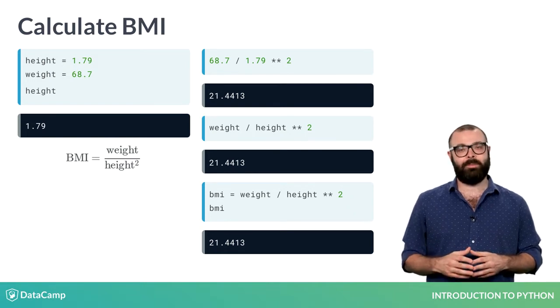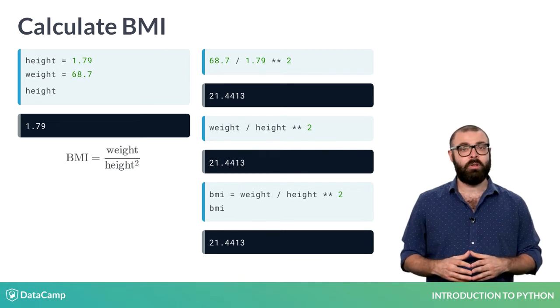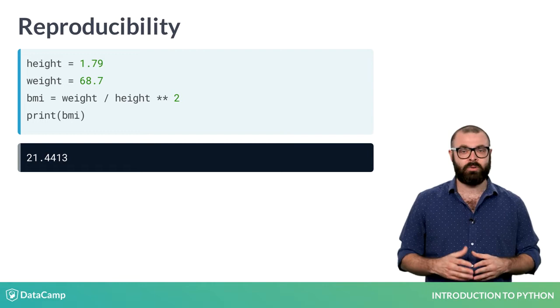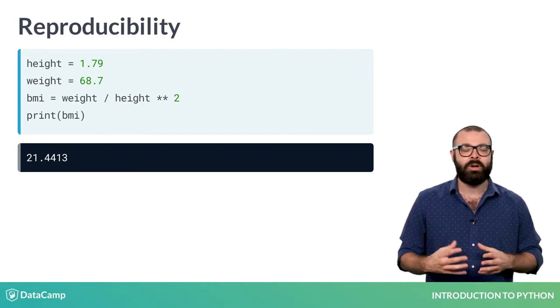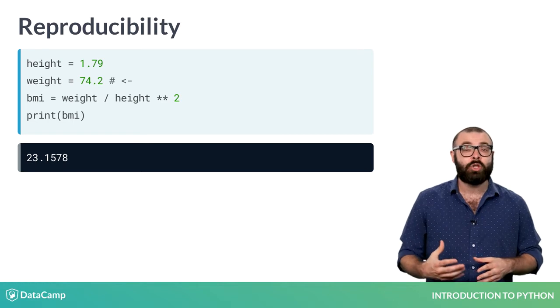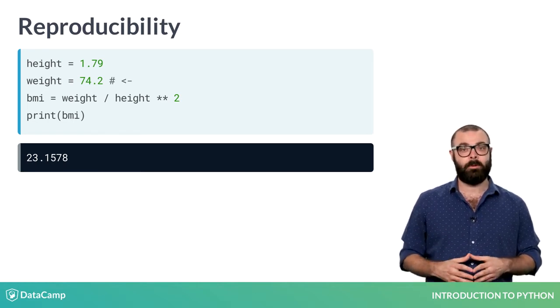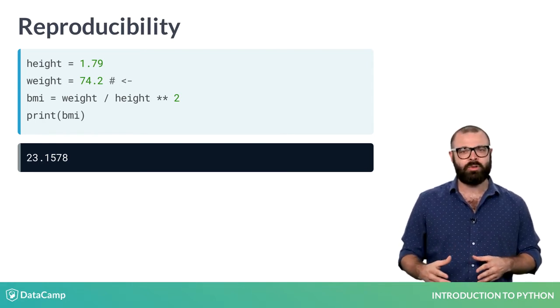In Python, variables are used all the time. They help to make your code reproducible. Suppose the code to create the height, weight and BMI variables are in a script like this. If you now want to recalculate the BMI for another weight, you can simply change the declaration of the weight variable and rerun the script. The BMI changes accordingly, because the value of the variable weight has changed as well.